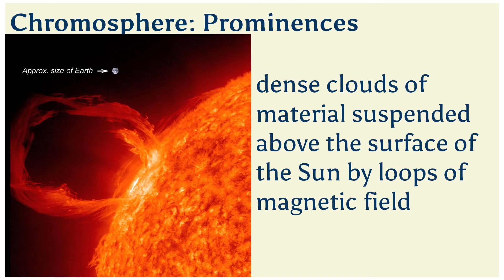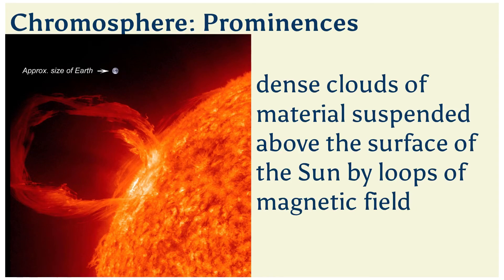Prominences are dense clouds of material suspended above the surface of the sun by loops of magnetic field. Prominences and filaments are actually the same thing, except prominences are seen projecting above the limb. Both can remain quiet for days or even weeks; however, as the magnetic loops slowly change, they can erupt and rise off the sun over the course of a few minutes or hours. To give you an idea of scale, the Earth is about the size of a small dot — you could fit many, many Earths inside one of these loops.